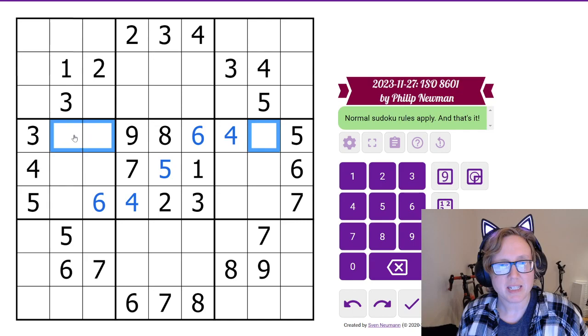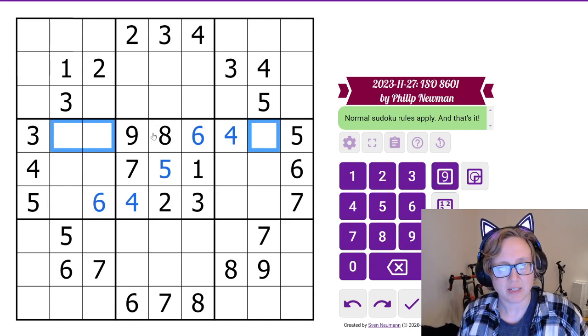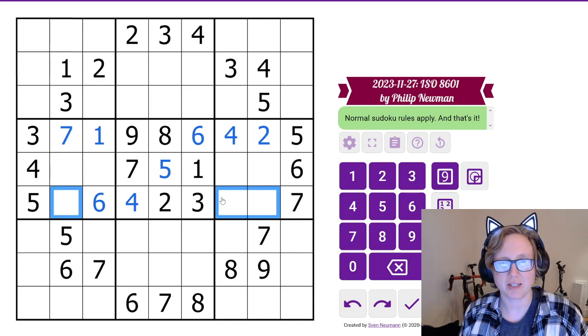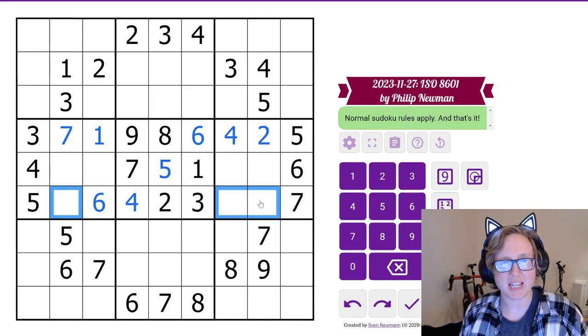Now, the remaining digits that I need here are 1, 2, and 7. And that means I can place a naked 1 there. 2 and 7. Let's see if I also get a symmetrical deduction here. I still need a 1, 8, and 9 here.